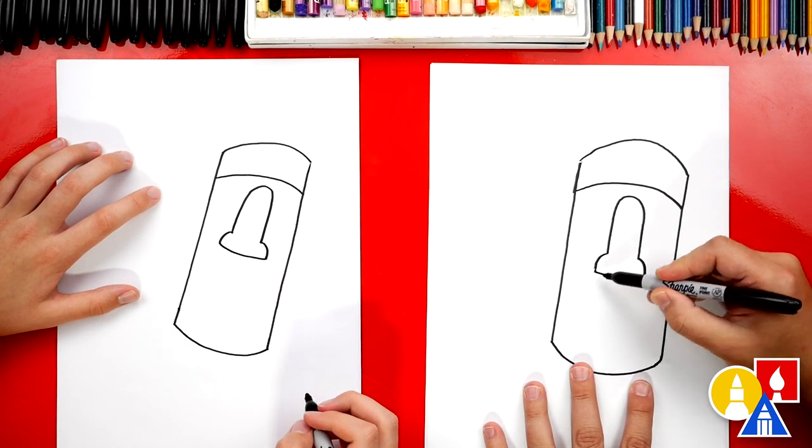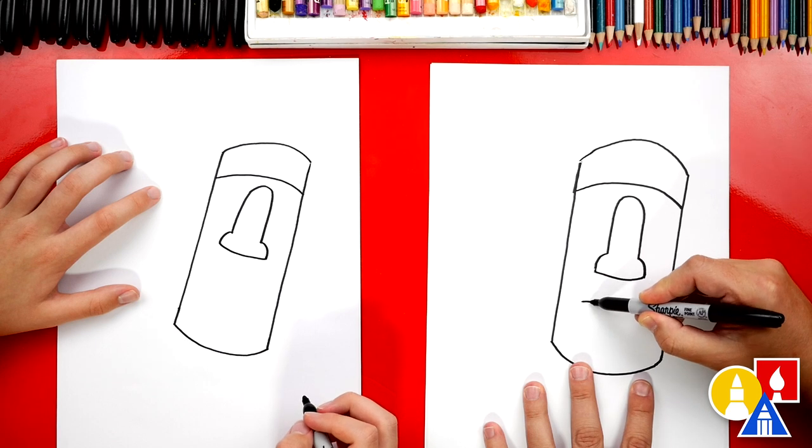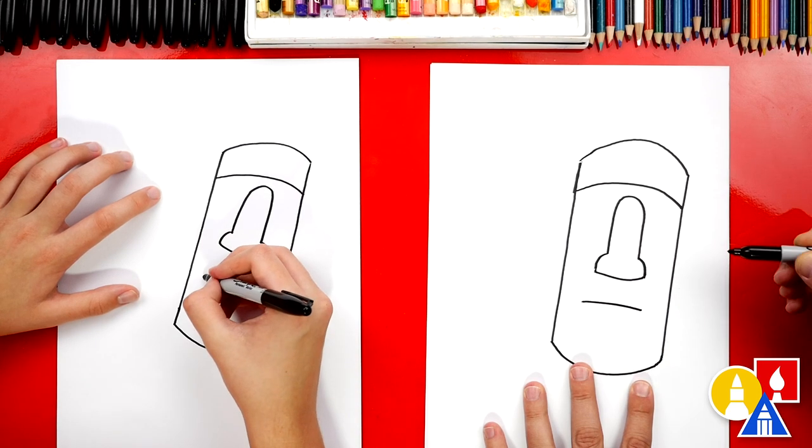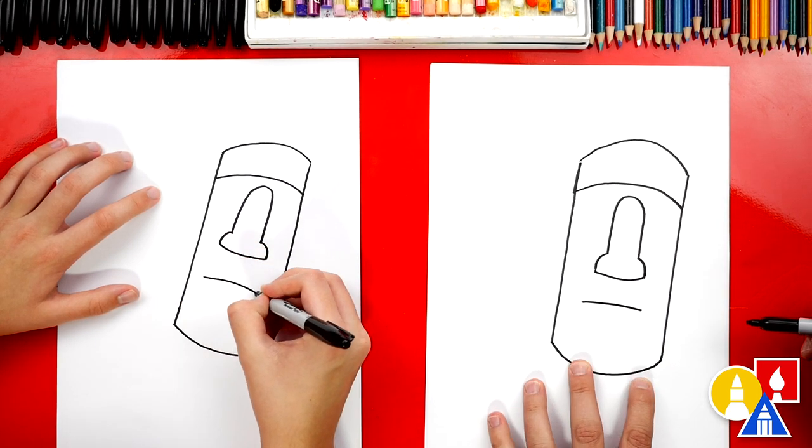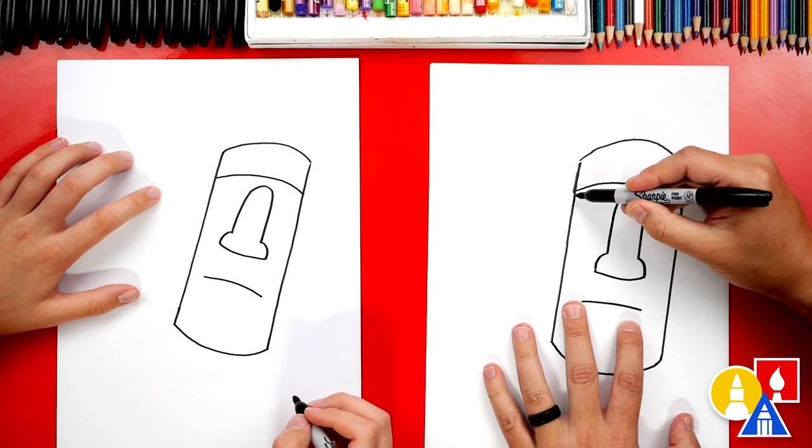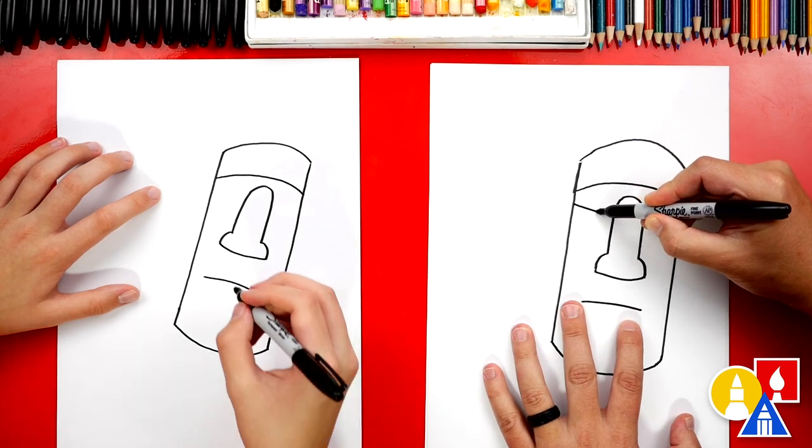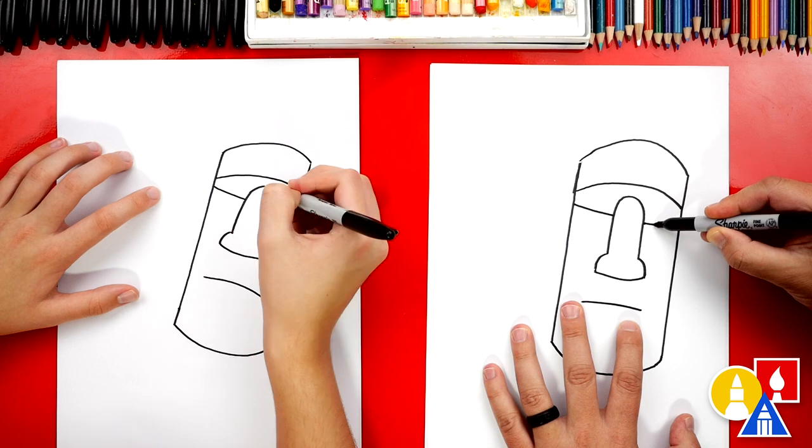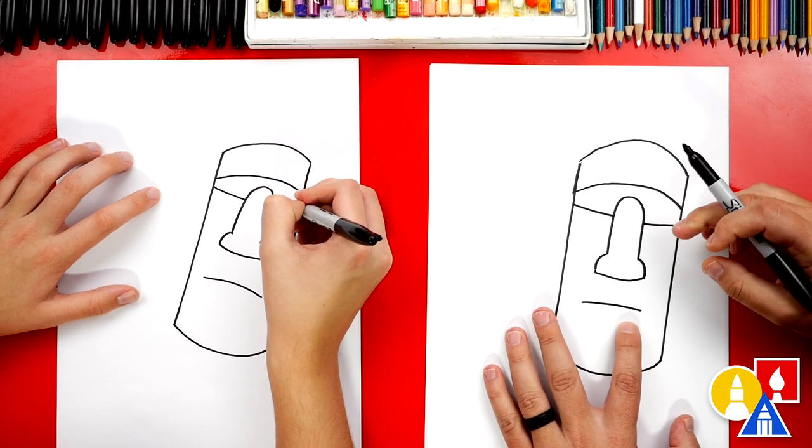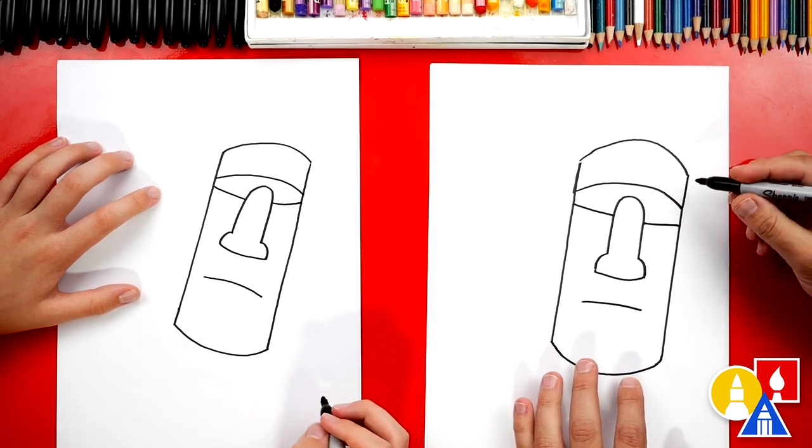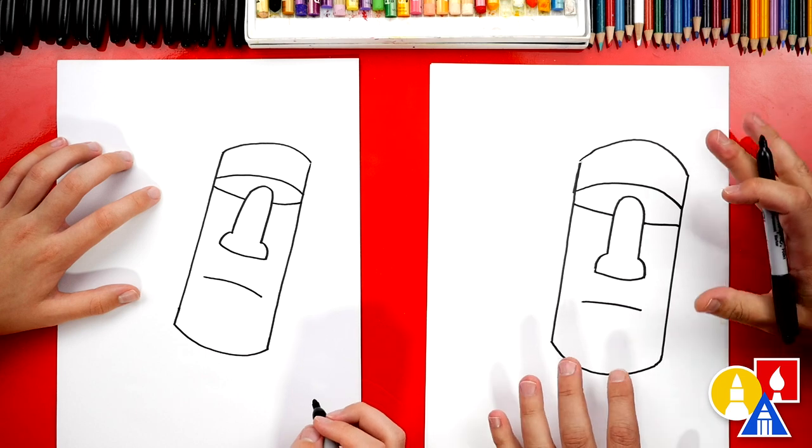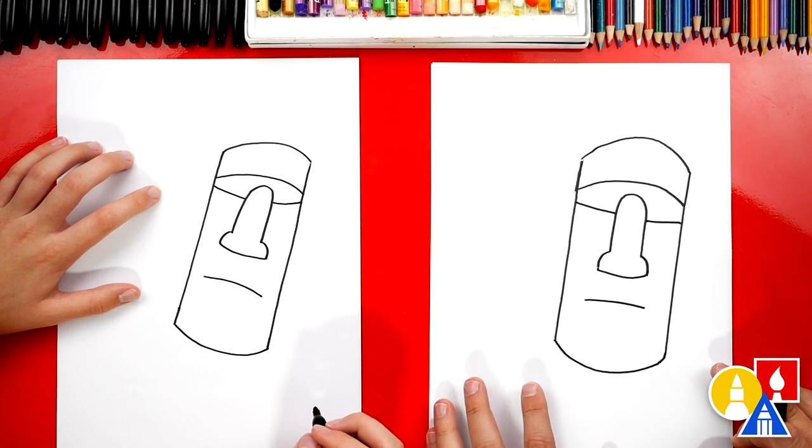Let's also draw the mouth. We're going to come just below the nose and we're going to draw a curve coming across. Let's come back up here and also draw the bottom of the eyes. Now this is really just the shadow, a really strong shadow on the bottom. And it's going to look super 3D when we're coloring because we're going to add shadows to our statue.